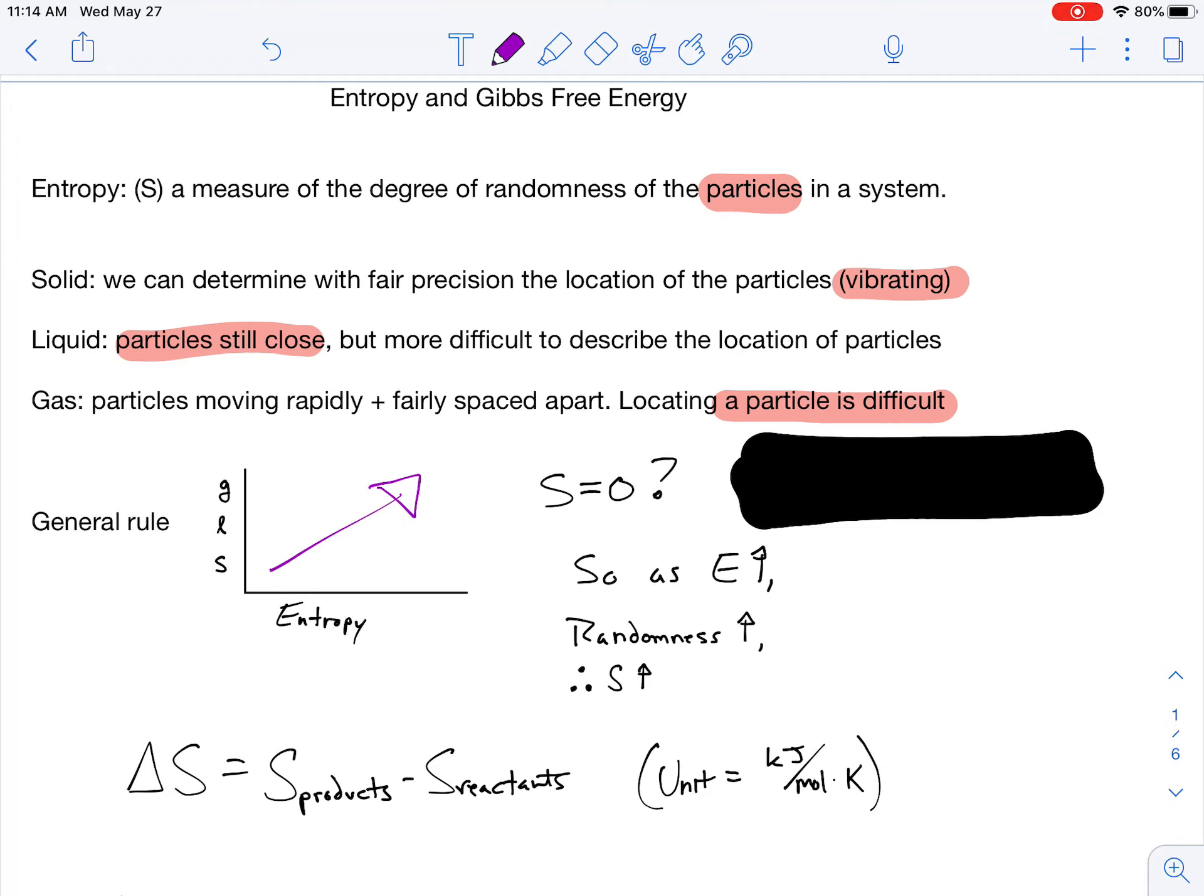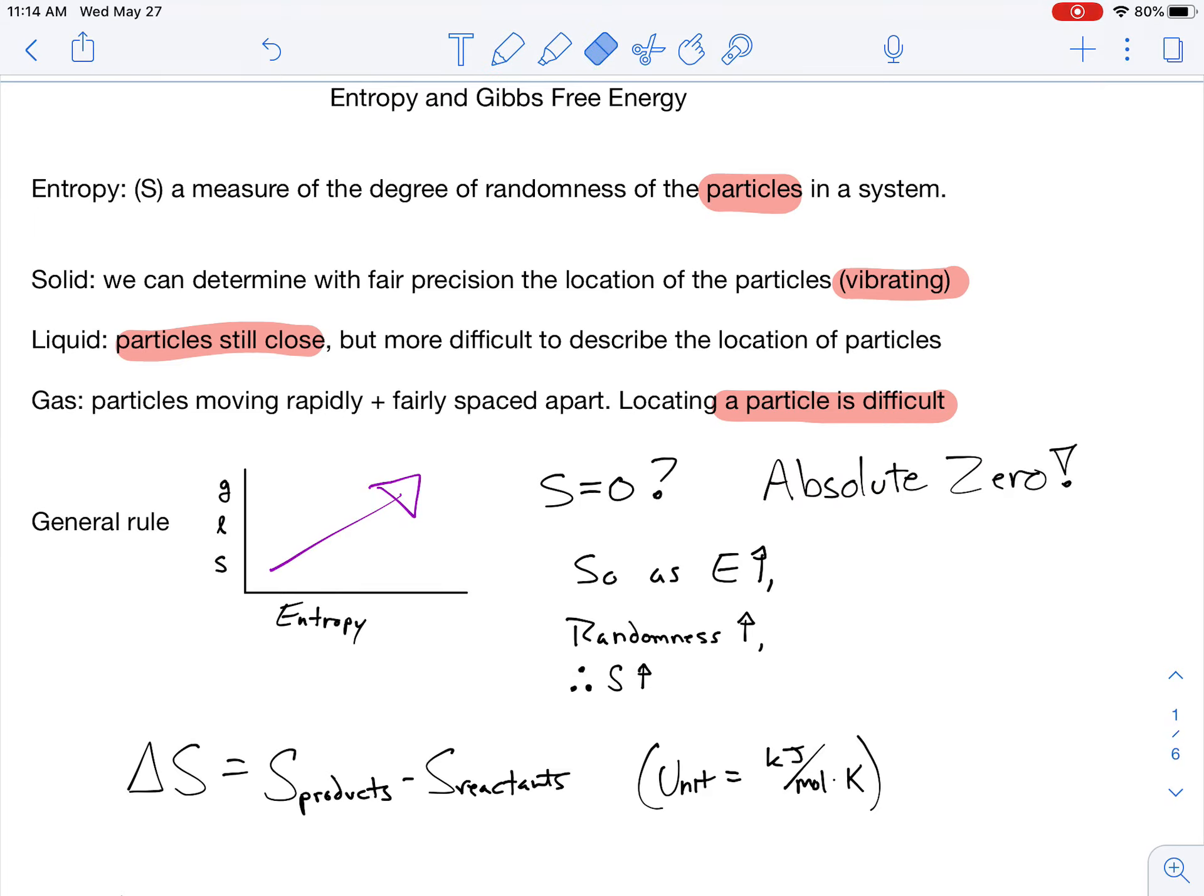If it's all about particles and locating them, when would it be zero? Or when would your individual particles be in an exact location? It would be not random at absolute zero. When things are at absolute zero, they stop moving. And if it's not moving, I can figure out exactly where it is, or get a very precise location.